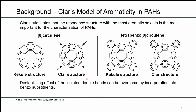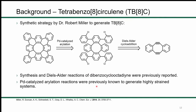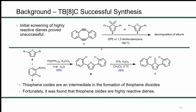Some of the earlier work in the group, by graduate student Dr. Robert Miller, was on tetrabenzo-8-circulene. The plan was to take dibenzocyclooctadiyne, subject it to a Diels-Alder cycloaddition to get an adduct intermediate, which could then undergo palladium-catalyzed arylation to close the final four bonds and get to tetrabenzo-8-circulene. This Pd-catalyzed arylation reaction was already well known for generating several highly strained systems.